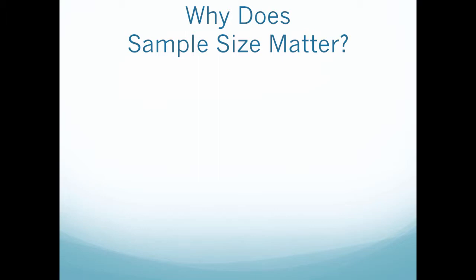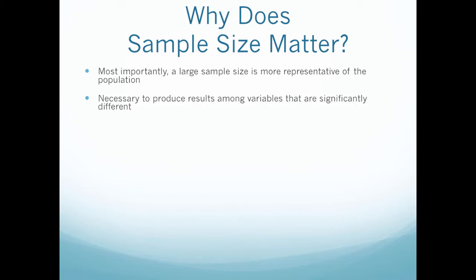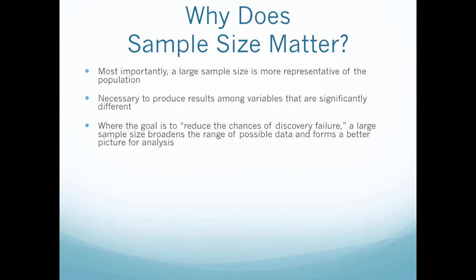So now the question: why do we go through all of this work? Why do we use that one z distribution formula? Why do we use the operating characteristic curves? Why don't we just go out and sample like 100 people every single time? There's a few reasons. First, a large sample size is more representative of a population. We know this based on the central limit theorem—that the more people we actually survey or poll, the more accurate our information will be. It's also necessary to produce results among variables that are significantly different. If we want to notice a difference if there actually is one, we need to sample a lot of people. When the goal is to reduce the chances of discovery failure, a large sample size broadens the range of possible data and helps us form a better picture for analysis.